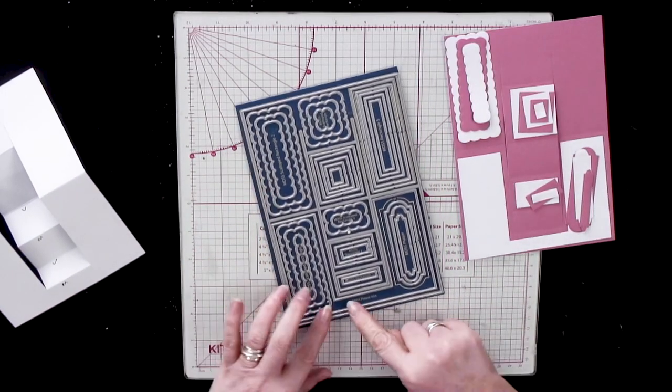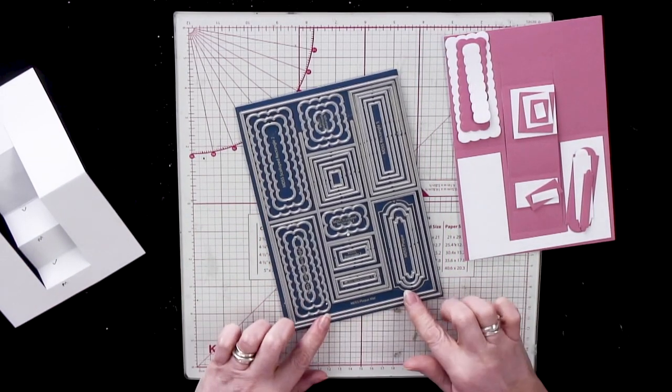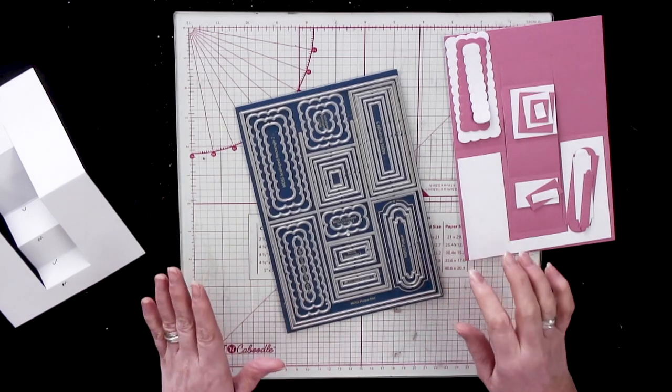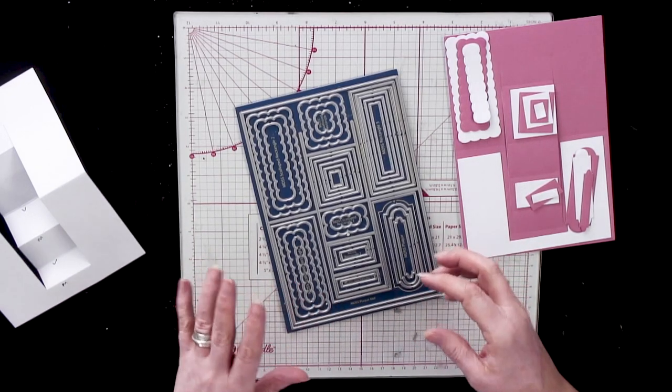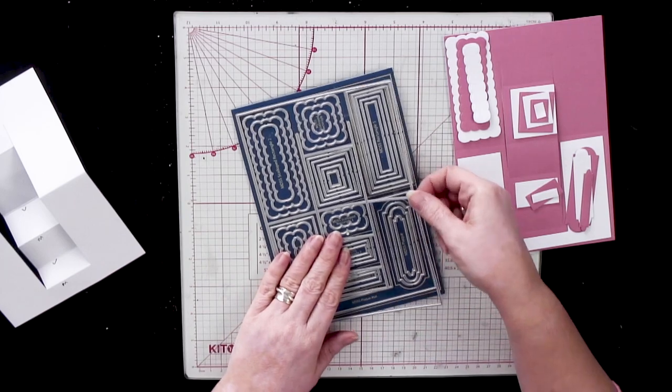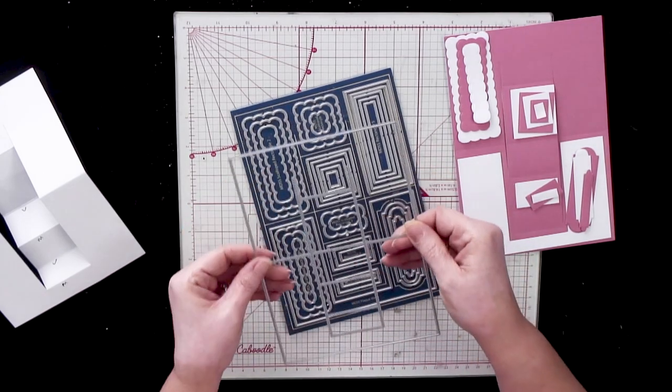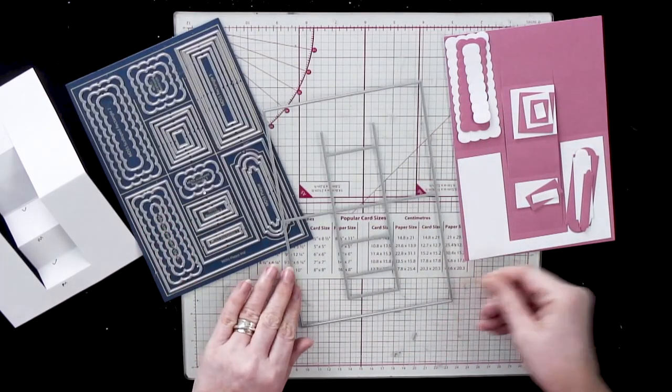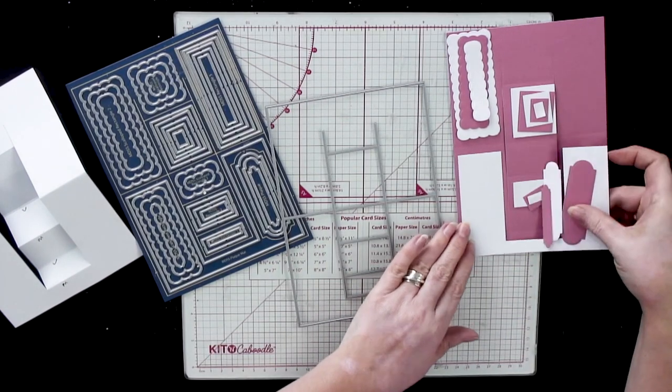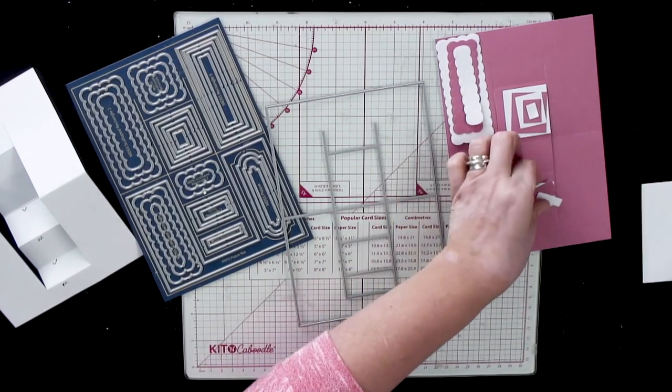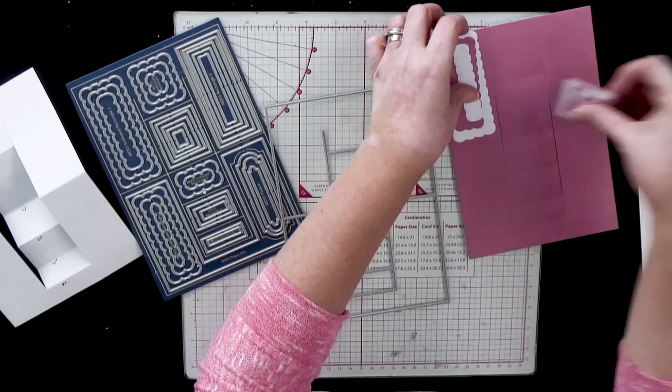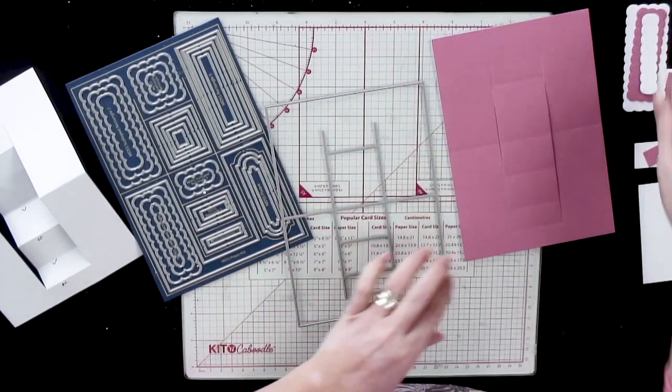So here we have the actual die set. As you can see, we've got lots of elements on here, lots and lots of layers. So if I lift that piece up, I'm just going to take all of these pieces off. These are all my mats and layers that I've cut out so I could just show you where the elements go.